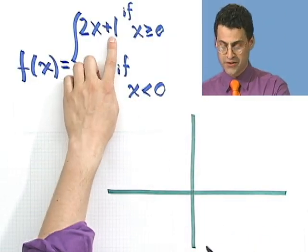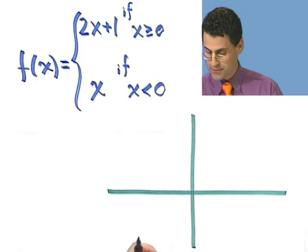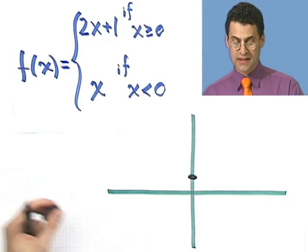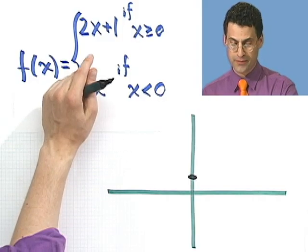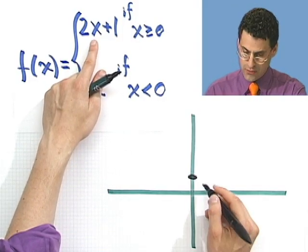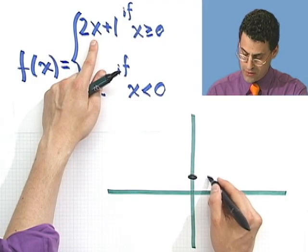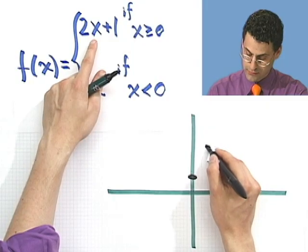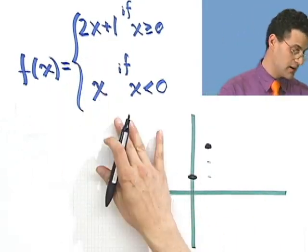Well that's a line that has y-intercept 1. So I go up to 1. And it has slope 2 over 1. So that means I go 1 over and 2 up. So 1 over and 2 up. And so there is the line.